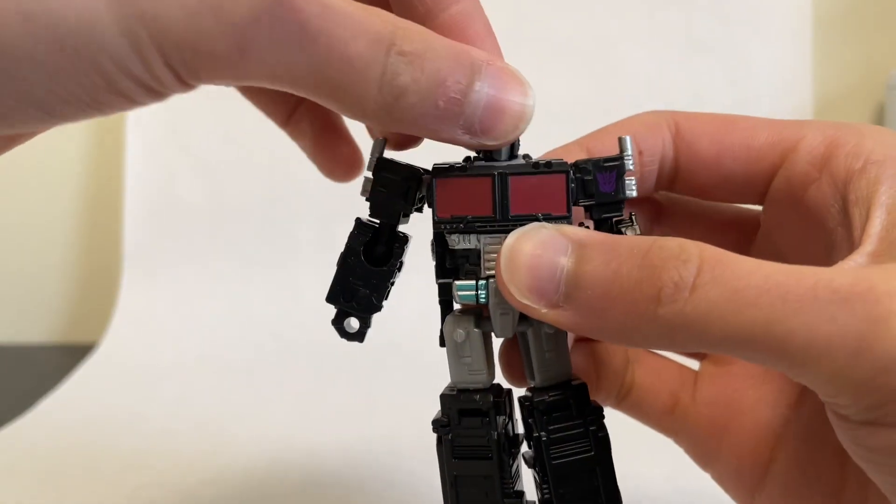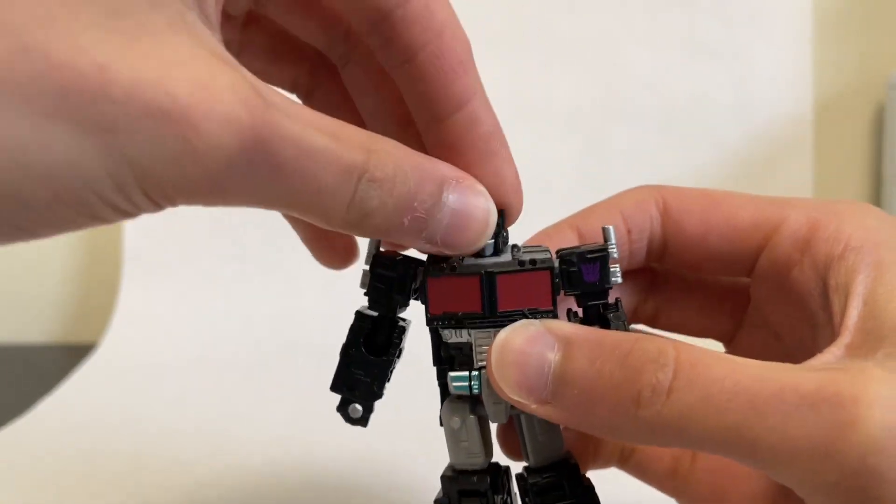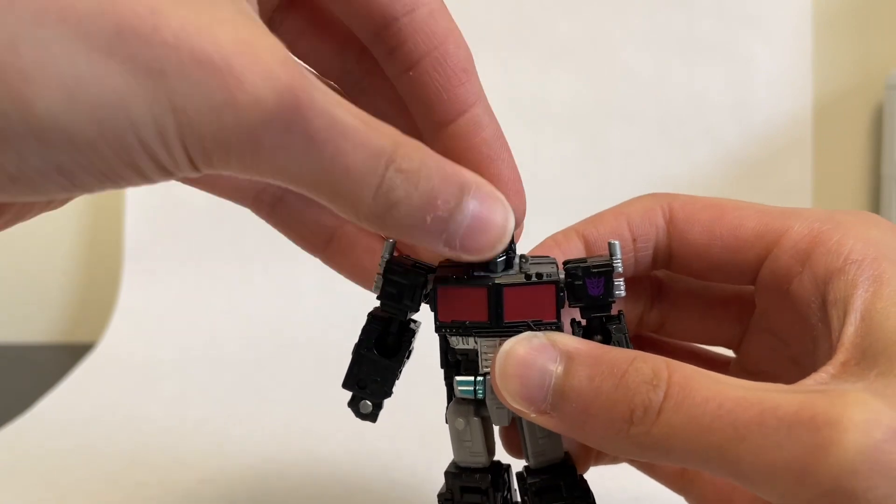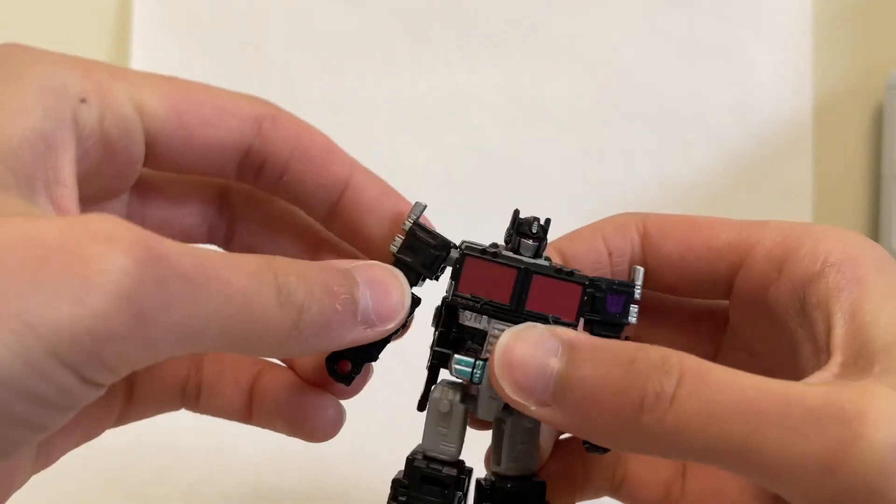So articulation, exactly the same as before. So you do have a swivel joint on the head, which only goes side to side. Not too bad. They did seem, at least on my copy, the head joint here for transformation is much stiffer. So that is nice to see.